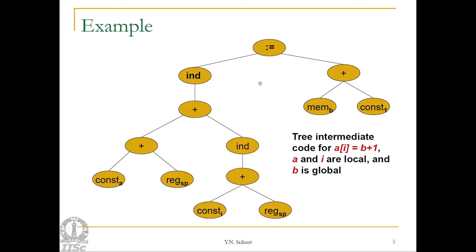Let us take an example of tree intermediate code. Instead of using quadruples, tree rewriting systems require tree intermediate code. This tree rewriting system shown by example will be a simple one — a complete tree rewriting system will require many more instructions. In this example we will take a very simple tree intermediate code, for example a[i] = b + 1, where a is a local array variable, i is a local variable, and b is a global variable.